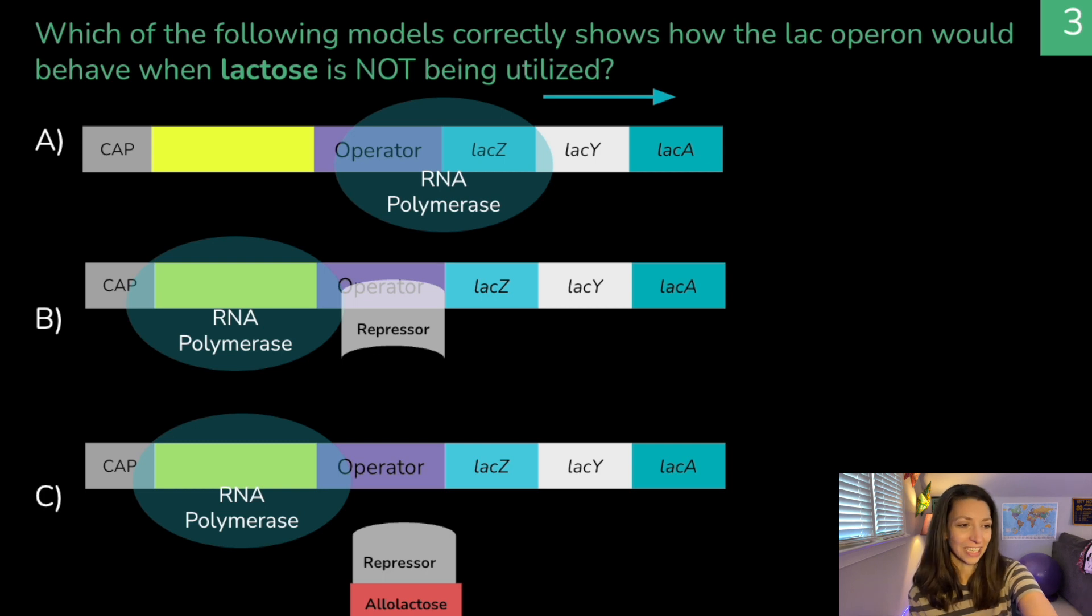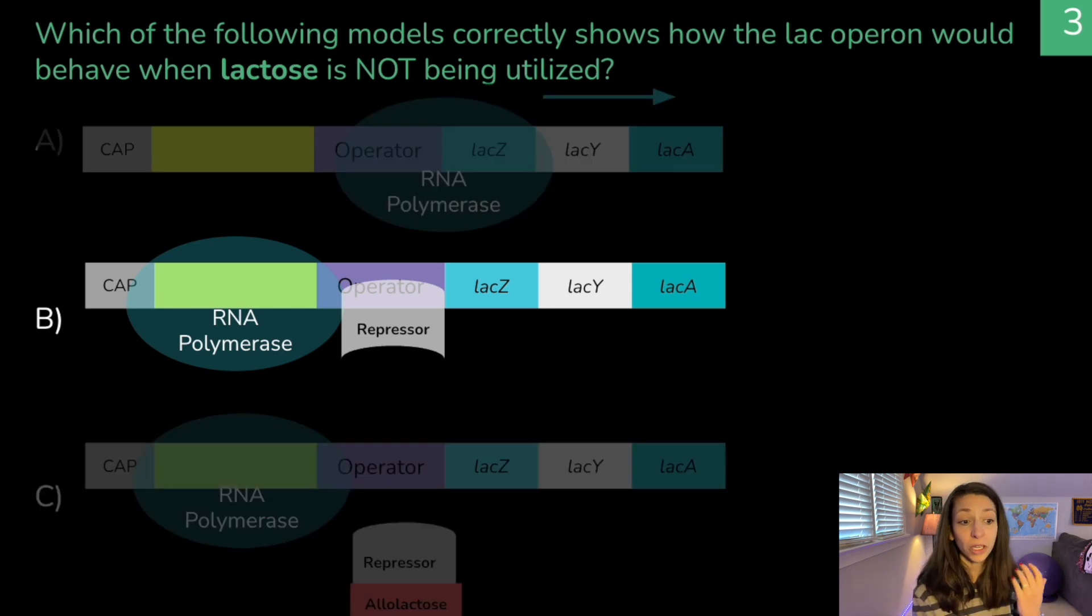The correct answer is B. So here transcription is blocked and the gene is turned off. It's not able to be transcribed, so we won't have any translation. There's no protein because we don't need it to digest lactose.